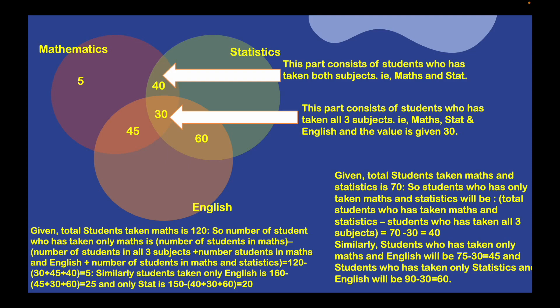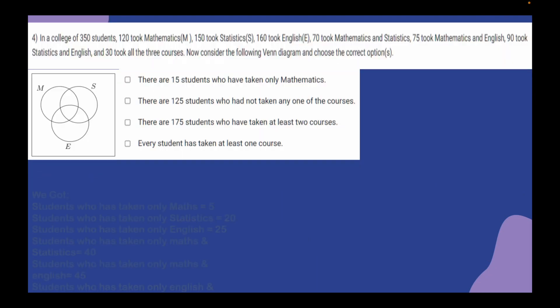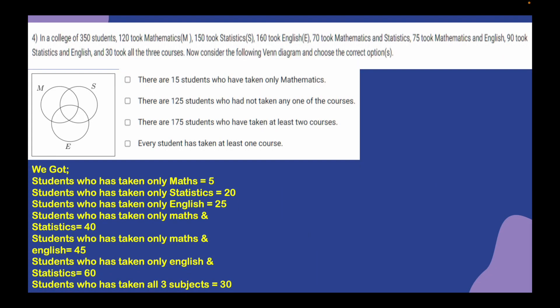Similarly, students who took only English is 160 minus 45 plus 30 plus 60, equals 25. Only Statistics is 150 minus 40 plus 30 plus 60, equals 20. So the derived values are: only Mathematics is 5, only Statistics is 20, only English is 25, only Mathematics and Statistics is 40, only Mathematics and English is 45, and only English and Statistics is 60.